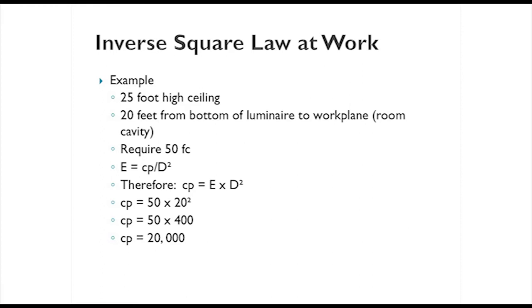Let's use this as an example. If E is equal to CP over D squared, therefore CP is equal to E multiplied by D squared. CP, if we're at 50 foot candles, is 50, 20, 20 times 20 is 400, 50 times 400 is 20,000. We need to look for a luminaire that has about 20,000 candle power.